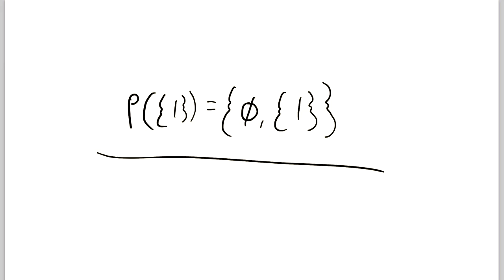The power set of a set A is just the set containing every subset of A. So here's an example. This is the power set of the set containing 1. The power set of the set containing 1 is the set containing the empty set as well as the set containing 1.